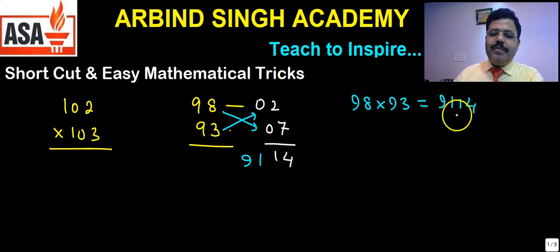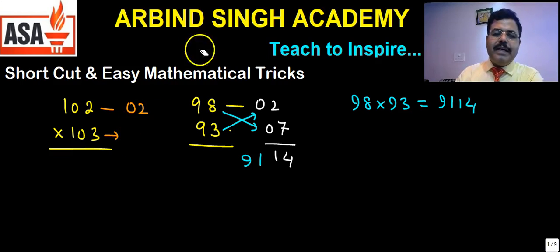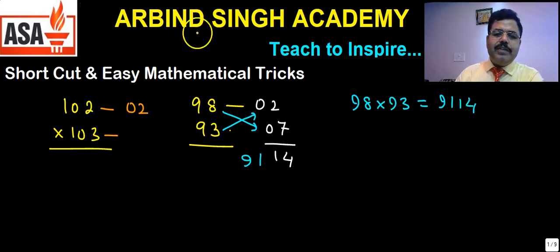Suppose you have number like 102 into 103, then how to write? It is 02 more than the 100, it is 03 more than the 100, so you need to write 02 and 03. As what we are doing, you make the product of numbers - that is 3 into 2 = 6.